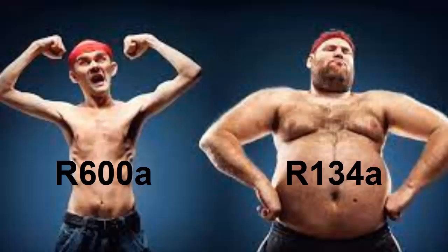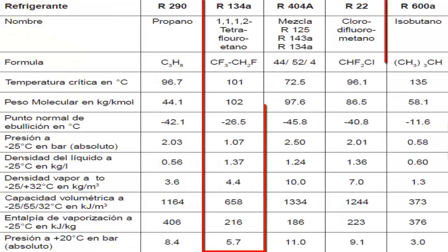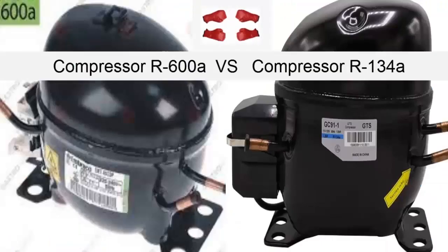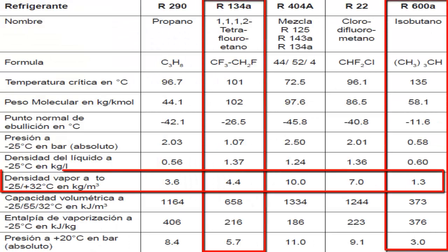In terms of refrigerant molecules, R134A in vapor state is heavier than R600A. This means that with a slight volume of gas passing through the compressor, several grams of R134A will be transported. Although R134A is less efficient in terms of cooling compared to R600A, the greater amount of grams passing through the R134A compressor ensures proper cooling of the product.